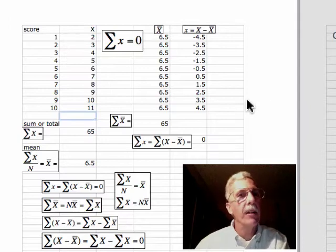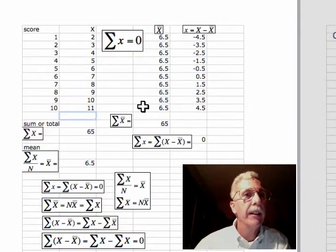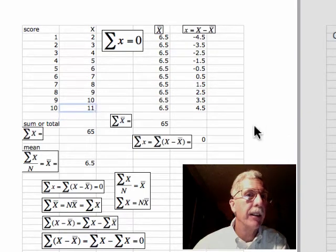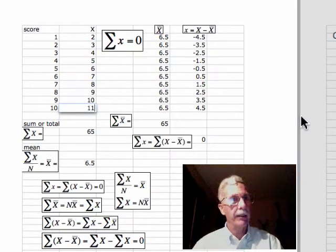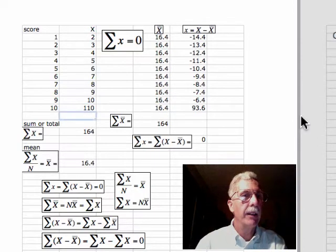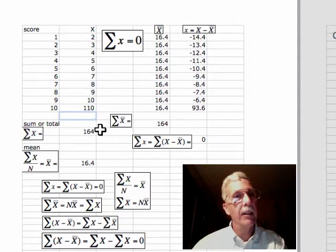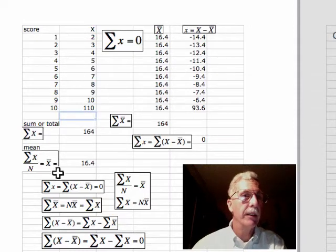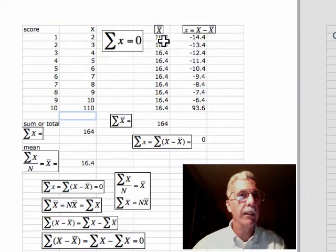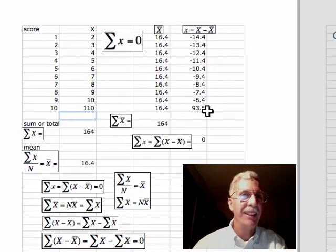And you might think, well, is this always the case? Yes. So what happens if we take our 11 here and we make it some nice big number like 111. The sum of the scores now goes up to 164. The mean becomes 16.4. And now we take that and subtract that from each of these. And now we have some nice big deviations here and a really big deviation here. And they sum to 0.